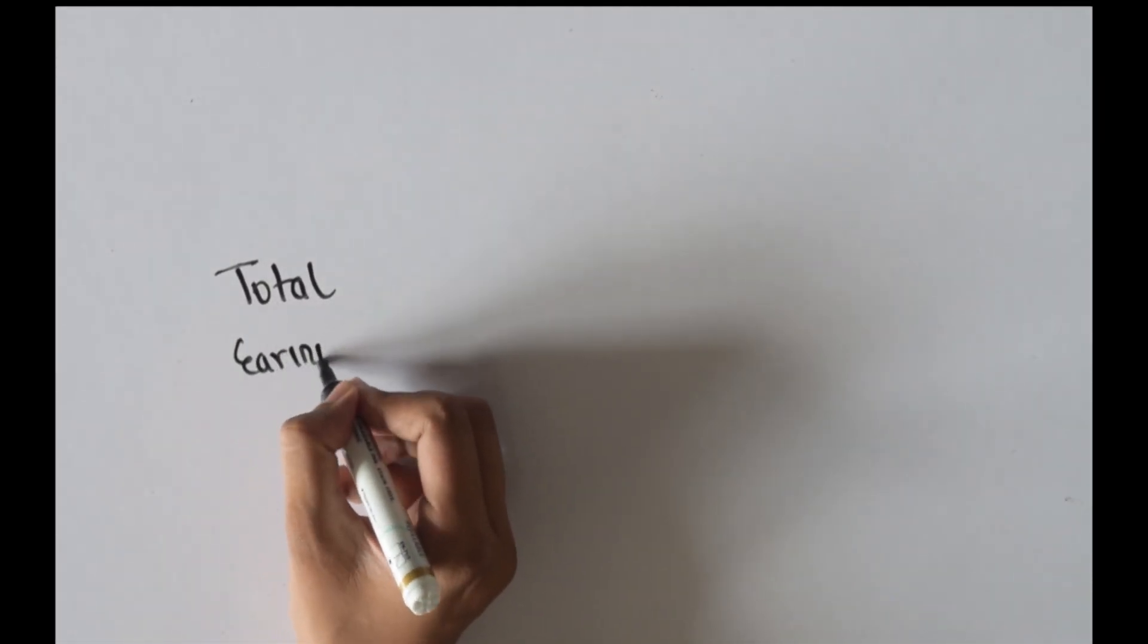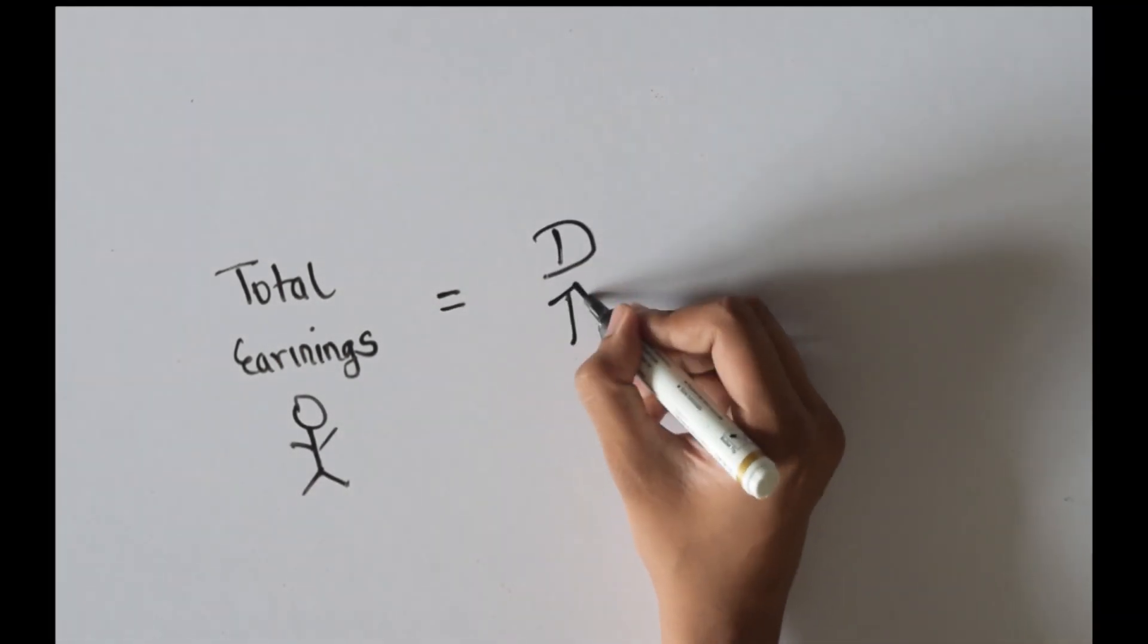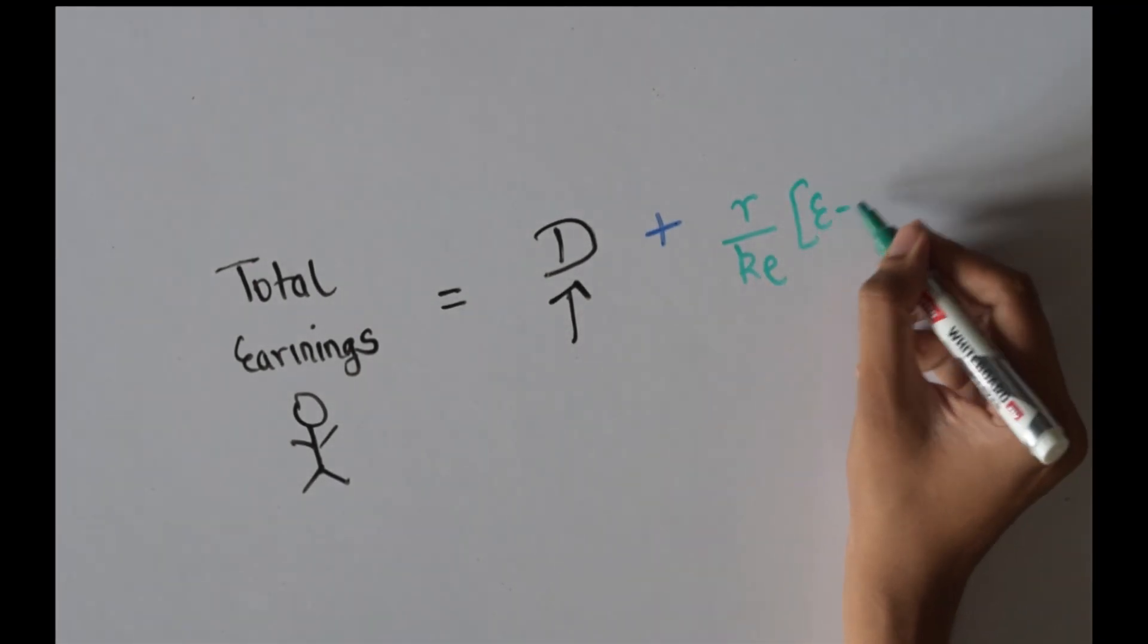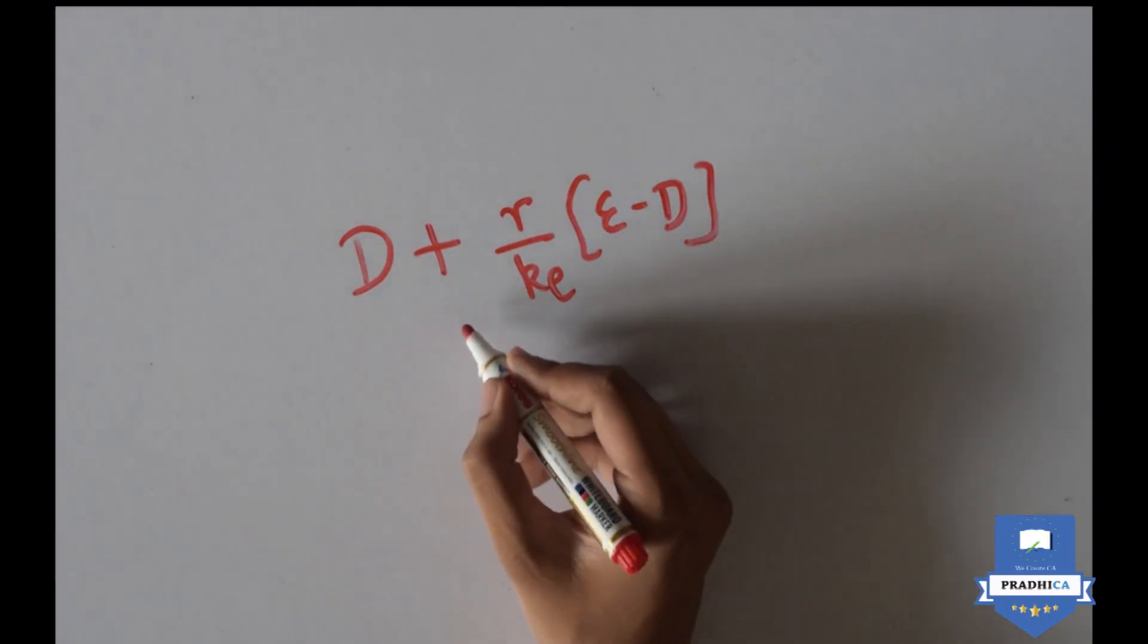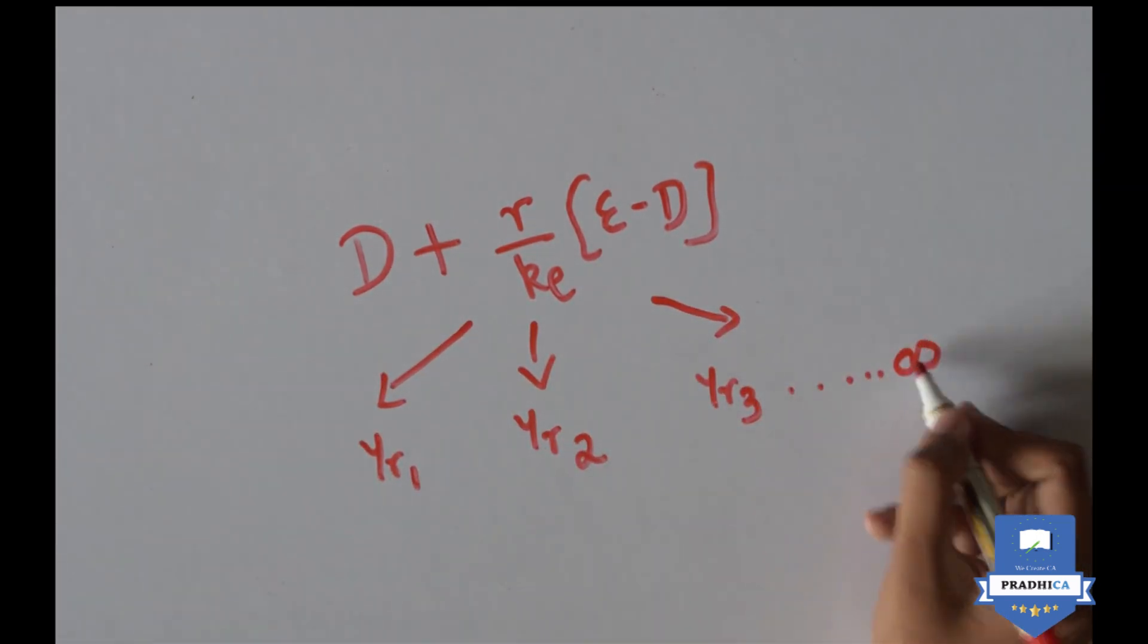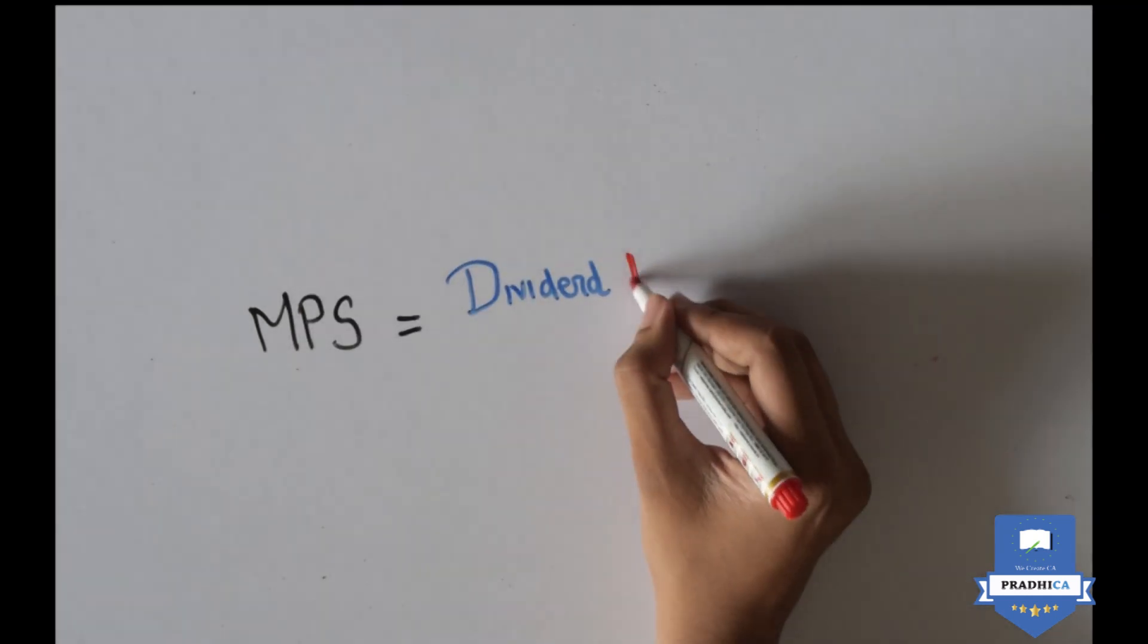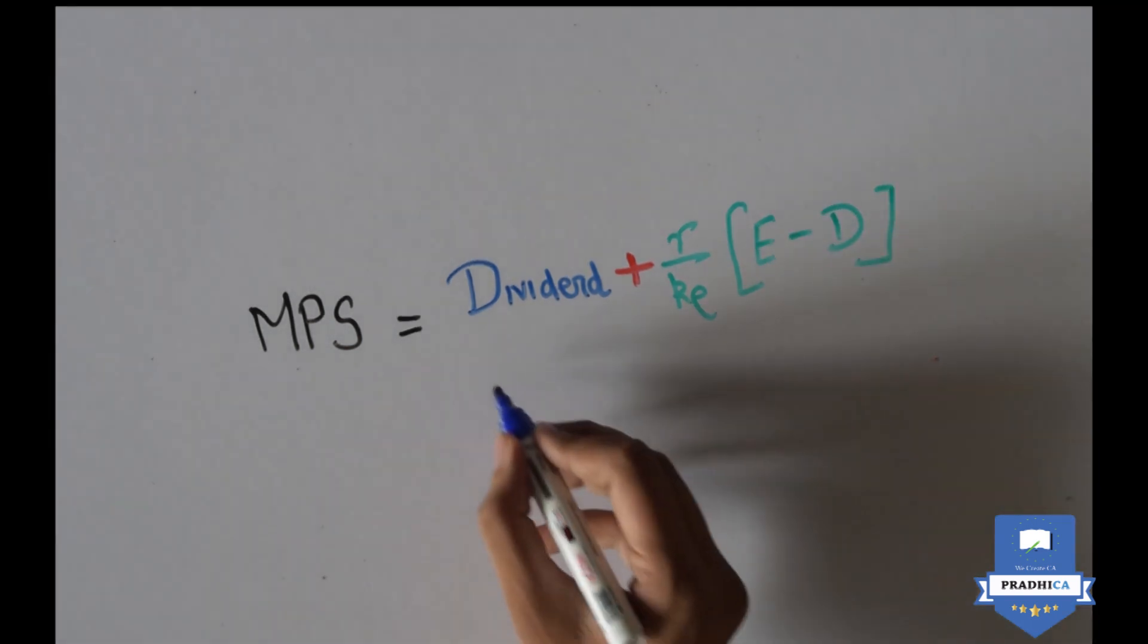The total earnings of our shareholders equals the dividends he earns in each year and the present value of this excess returns which are reinvested. This total earnings of the shareholders is earned by him in each year until infinity. Applying the concepts of geometric progression once again, we are able to arrive at the formula proposed by Walter to value the market price of shares.